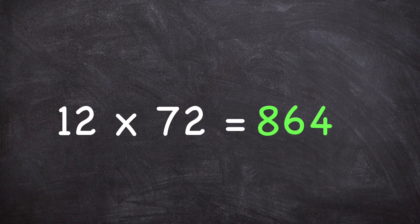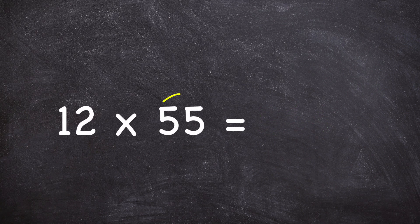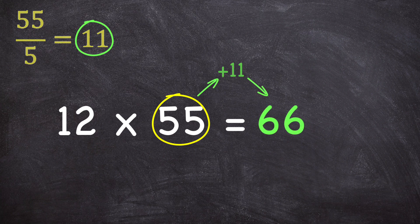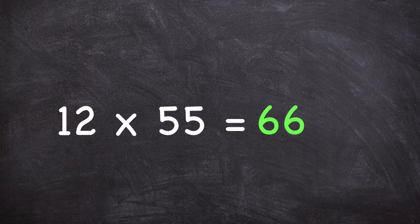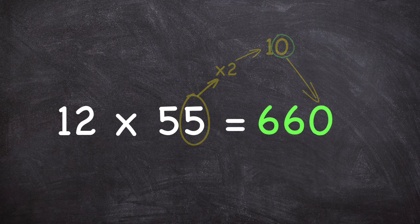Let's try one more time so you can see how fast this can be done as you get the hang of it. To find the product of 12 times 55, you take 55 and figure out how many whole times 5 goes into 55. 55 divided by 5 is 11, so you add 11 to 55 to determine there are 66 tens in the product. Then to get the ones digit, take the ones digit of 55, which is 5, double it to get 10, then use the ones digit of that answer, 0, for the ones digit of the product, making the product 660.